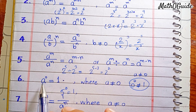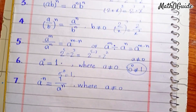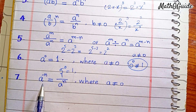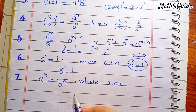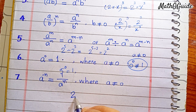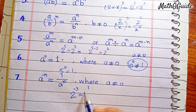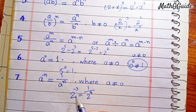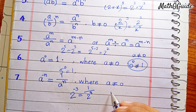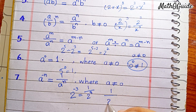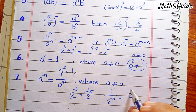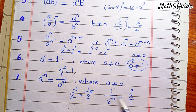Any number raised to power 0 equals 1. The last rule is the negative power rule. When we have a negative power, for example 2 raised to power minus 3, and we want a positive power, we take the reciprocal. So 2 moves under the bar and the power becomes positive. Similarly, if 2 raised to power minus 3 is under the bar, we can write it above as 2 raised to power 3 over 1. This is called the reciprocal.